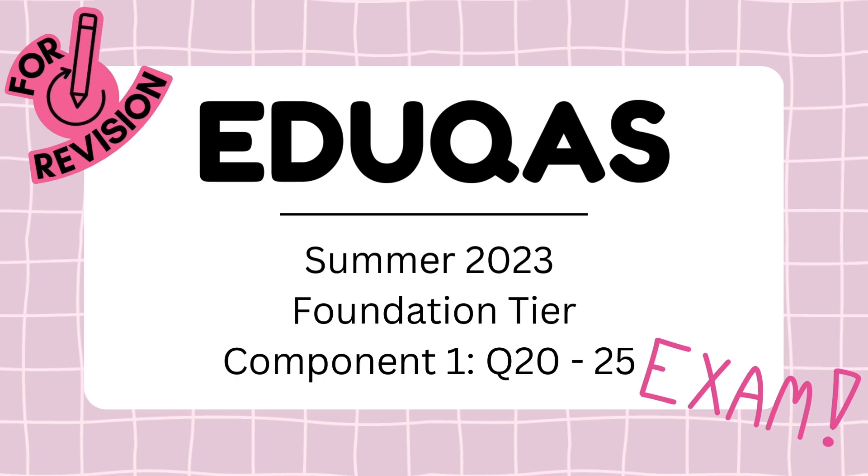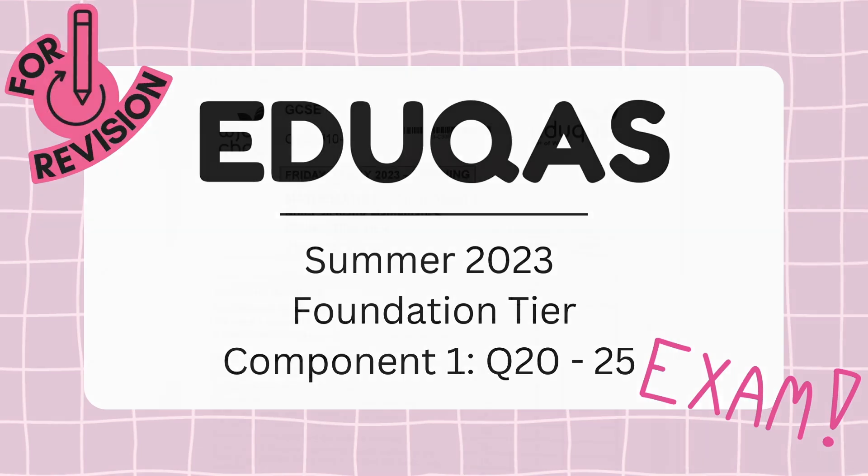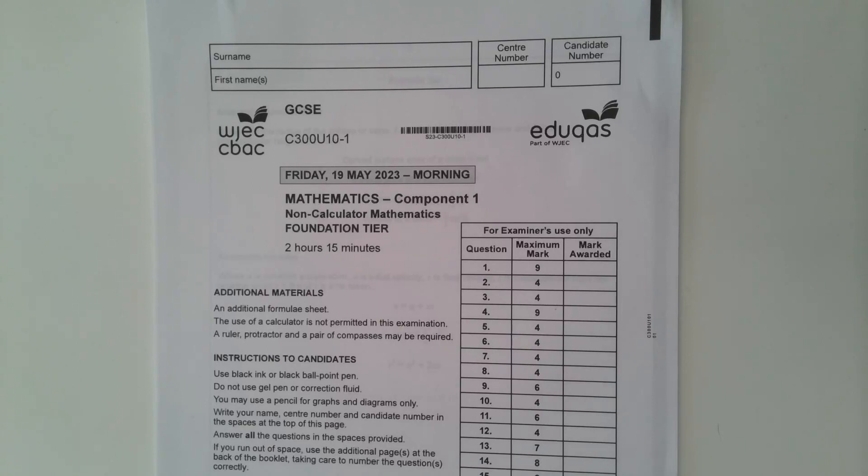Hi there, this video is an exam paper walkthrough of the EDUCAS GCSE Mathematics Foundation Tier Component 1 paper from Summer 2023. This paper is worth 120 marks in total and this is the 6th video of 6. It will focus on questions 20 to 25 which account for 25 of these marks. EDUCAS Component 1 papers are non-calculator papers so a calculator should not be used.